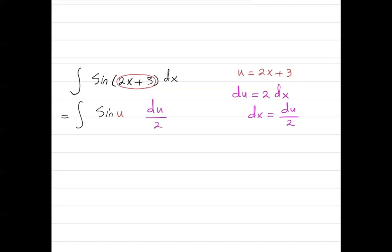In a simpler version, this is a half integral sine u du that you already know how to deal with. When you have the integral of sine u du, it is negative cosine u plus c.